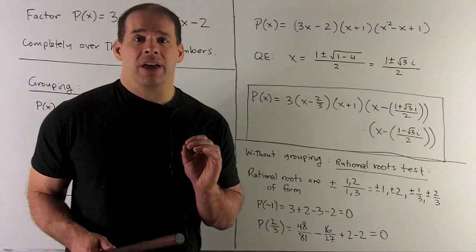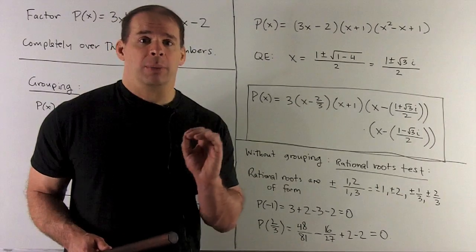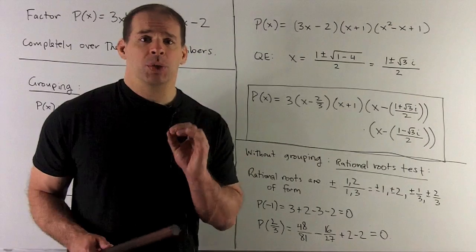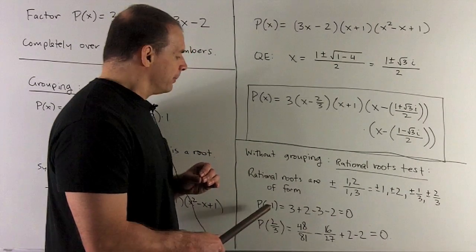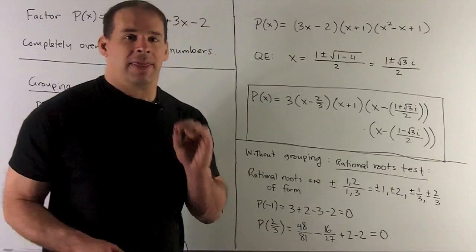So your work from there is, you're going to have to try out each of those in our polynomial, and that's a little bit of work. You'll get hits when you put in minus 1. So you get 3 + 2 - 3 - 2 = 0. That's not so bad.